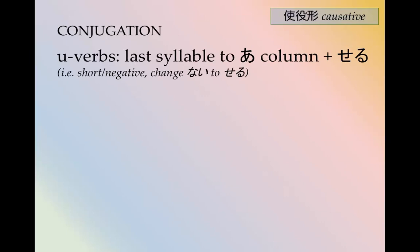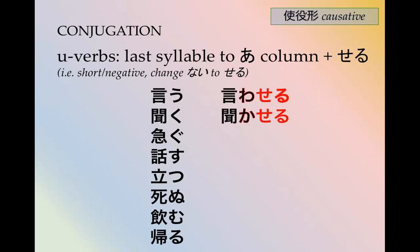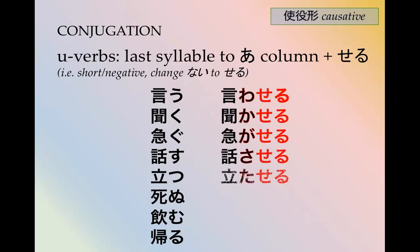U-verbs, like the negative or the passive, you change the last syllable to 'a' and then add せる. So 言う becomes 言わせる。 聞く becomes 聞かせる。 急ぐ becomes 急がせる。 話す becomes 話させる。 立つ becomes 立たせる。